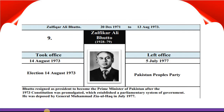Zulfikar Ali Bhutto took office 14th August 1973 and left office 5th July 1977. He was elected in elections held on 14th August 1973 and belongs to Pakistan People's Party. Bhutto resigned as President to become Prime Minister after the 1973 Constitution was promulgated, which established a parliamentary system of government. He was deposed by General Muhammad Zia-ul-Haq in July 1977.